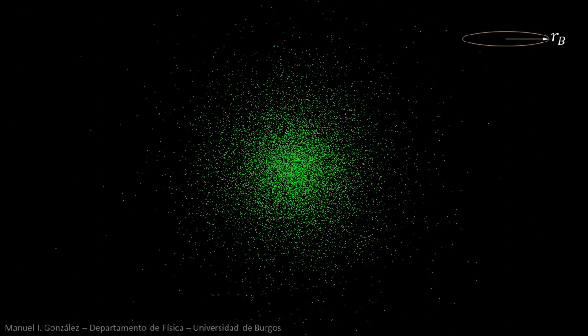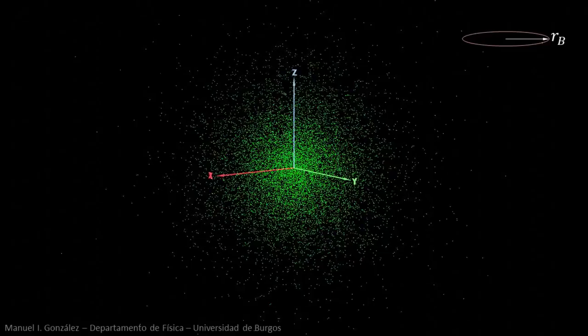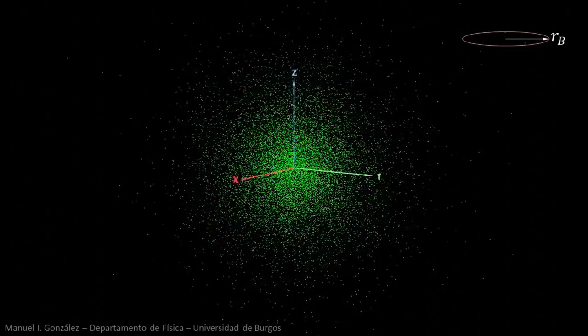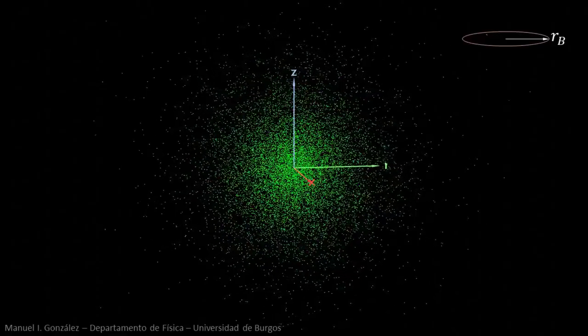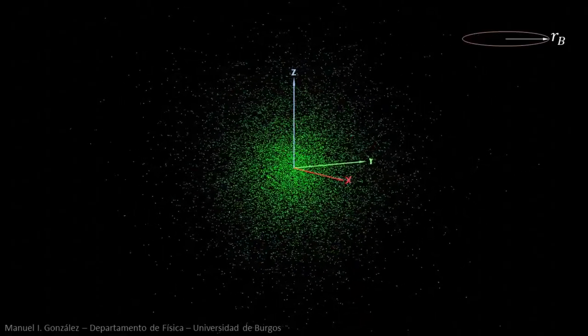Instead, it occupies a region of space around the proton, called orbital. This simulation depicts the orbitals as clouds of points. The regions with the highest density of points are those where the electron is most probably found.